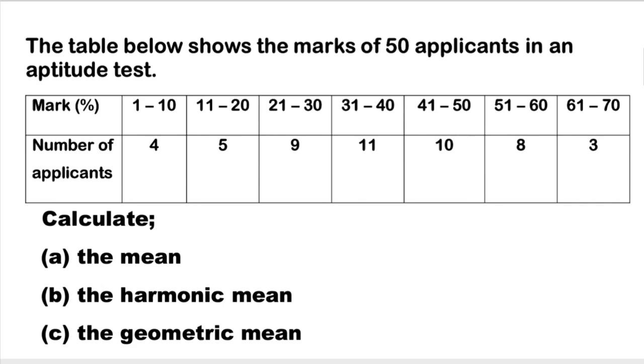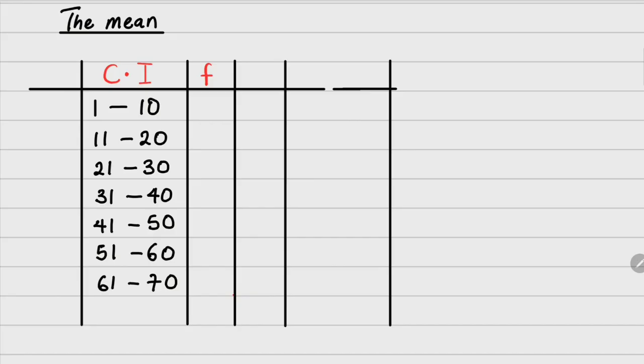Let's start with the first, which is the mean. To find the mean, we need to know the formula for mean. Mean equals summation fx over summation f. In this case, we need our f column, which is the frequency already given to us, then we need to get the x column and the fx column.